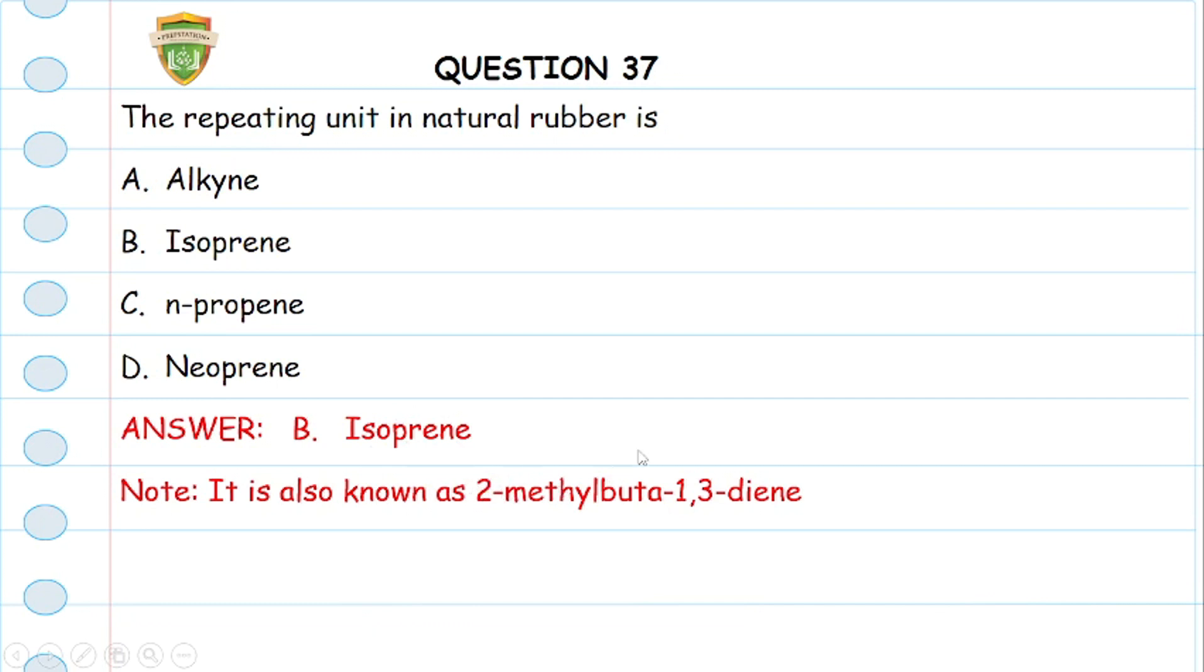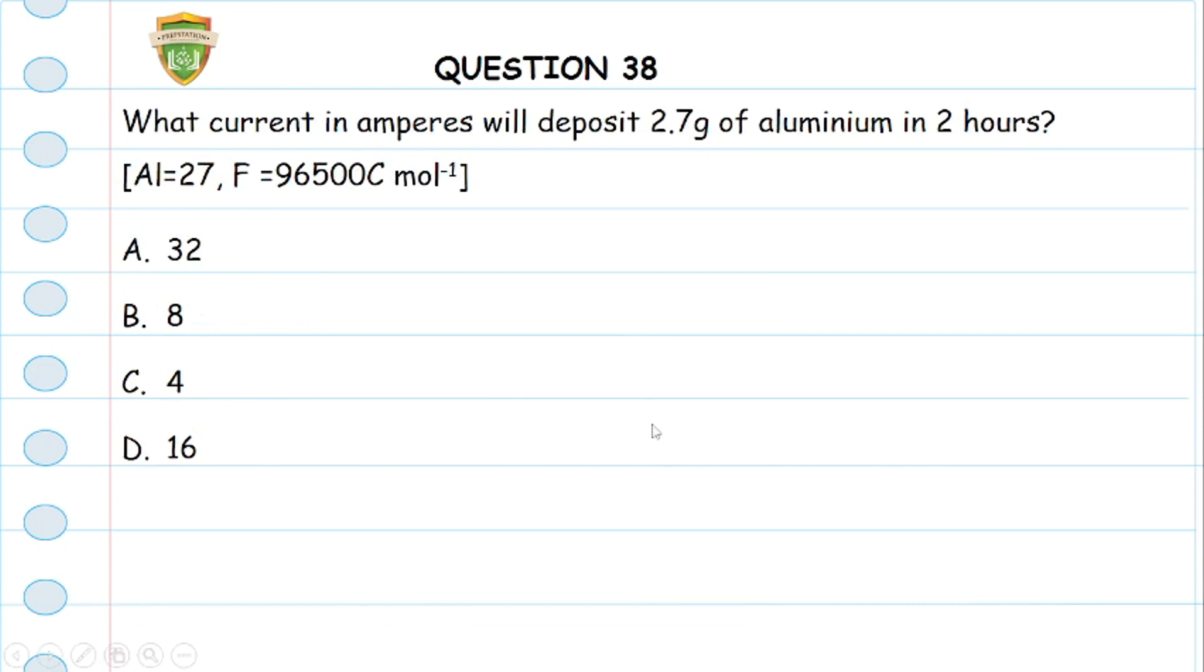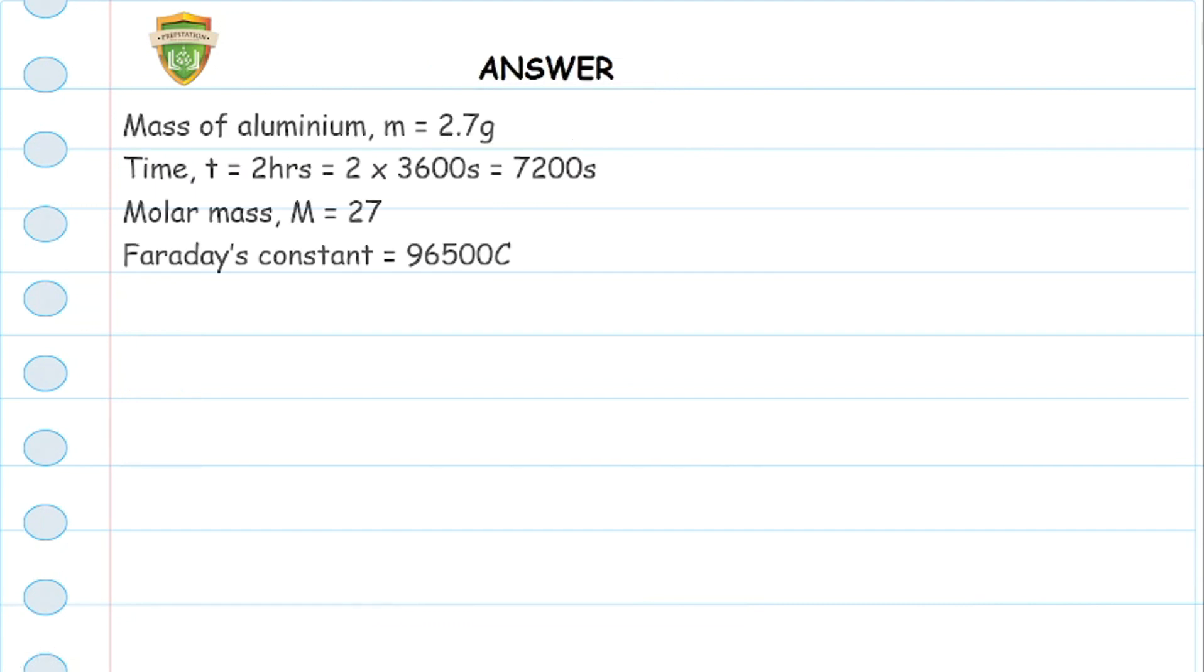Question 38: What current in amperes will deposit 2.7 grams of aluminium in two hours? We're given the atomic number of aluminium as 27 and Faraday's constant as 96500 coulombs. So we get all our parameters: the mass is 2.7 grams, the time is 2 hours. SI units for time is seconds, so we convert. The molar mass is 27, and Faraday's constant is 96500.